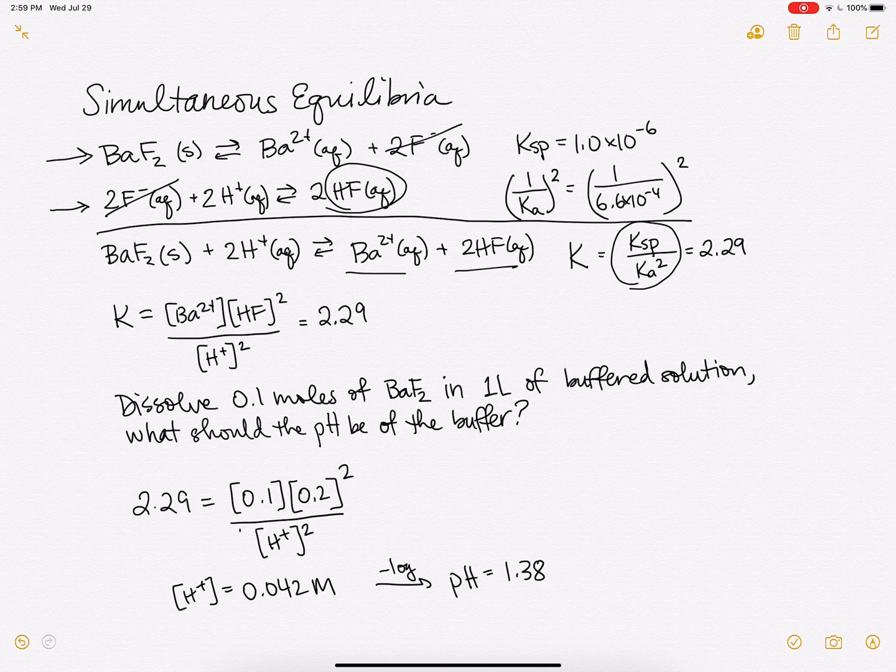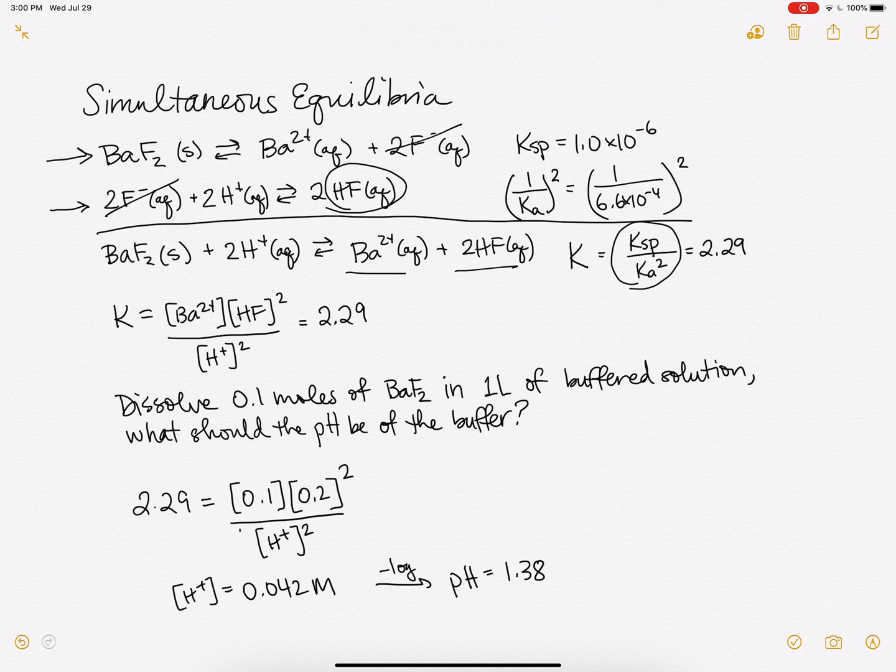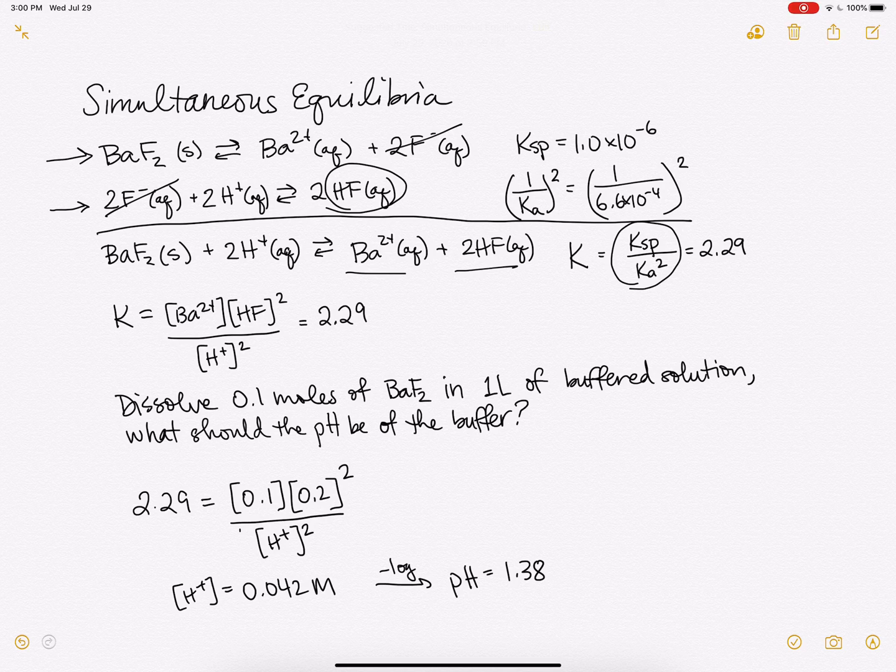And then the last thing is, what's the implication of this? Obviously, this will be way more soluble in an acidic solution because the K is much larger than it was otherwise. And we can figure out what kind of pH buffer would be most effective for dissolving this. Just substituting in here the values for the things that we wanted to dissolve and solving for the concentration of H+. So I hope that's helpful to you.